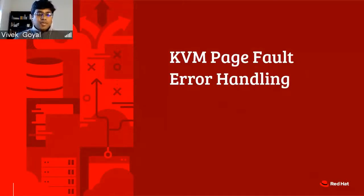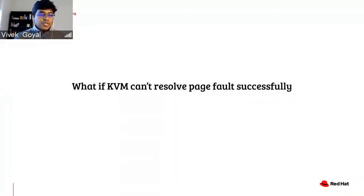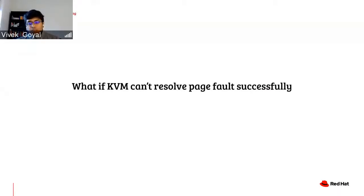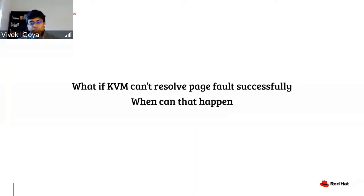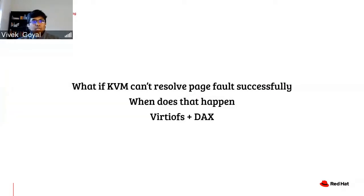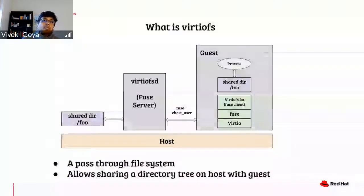Now let's talk about KVM page fault error handling. One question is: what happens if we cannot resolve the page fault? What is the current behavior and how can it be improved? I ran into these issues when running virtiofs with DAX enabled. Before going further, virtiofs is a fairly new pass-through file system, similar to virtio-9P — it's a shared directory, but fuse-based. It allows taking one directory on the host and exporting it into the guest.